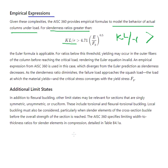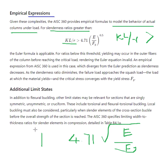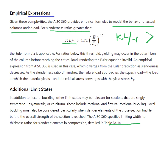The limiting factor is 4.71 times the square root of E/Fy. If the slenderness ratio is greater than this limiting factor, the Euler formula is applicable. For ratios below this threshold, yielding may occur in the outer fibers of the column before reaching the critical buckling load, making the Euler equation invalid. AISC 360 provides an empirical expression used in this case, which diverges from Euler predictions as slenderness decreases.